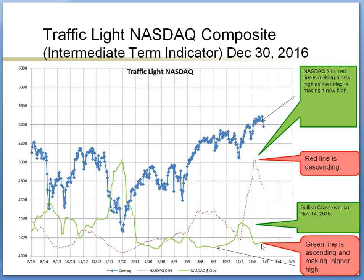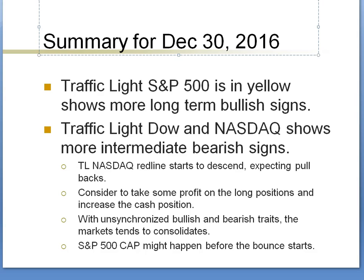Here is the summary for December 30th, 2016. Traffic light S&P 500 is showing more long-term bullish signs. Traffic light Dow and Nasdaq show more intermediate bearish signs. Traffic light Nasdaq red line has started to descend, expecting pullbacks. Consider taking some profit on long positions and increasing cash position. With unsynchronized bullish and bearish trades, the market tends to consolidate. An S&P 500 capital appreciation point might happen before the bounce. Thank you for listening and have a happy new year!